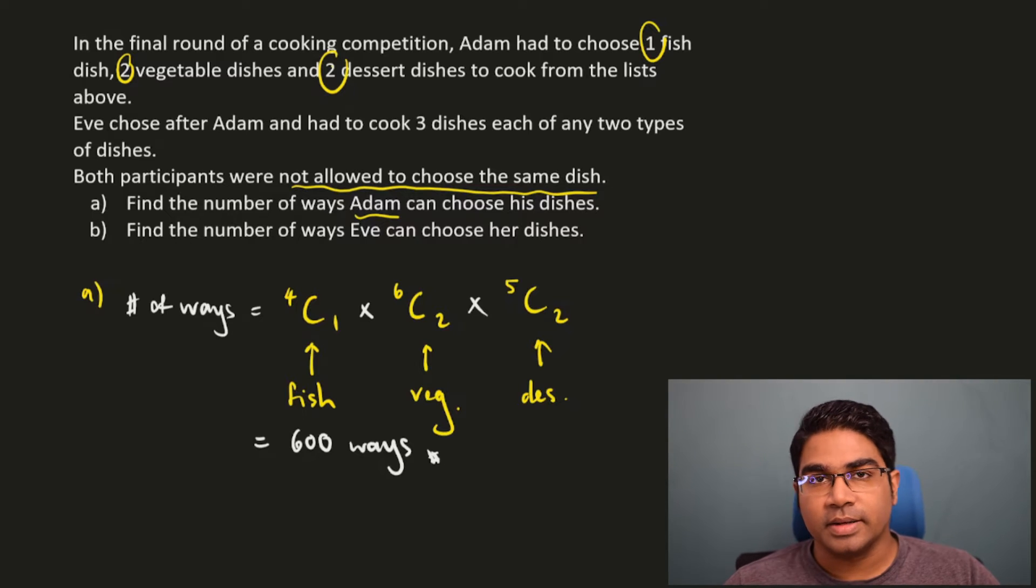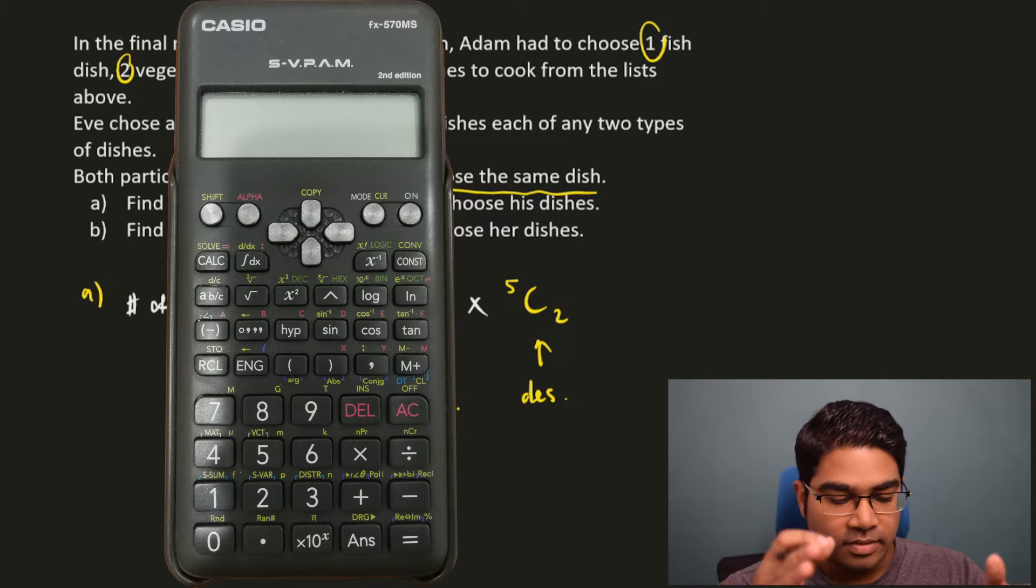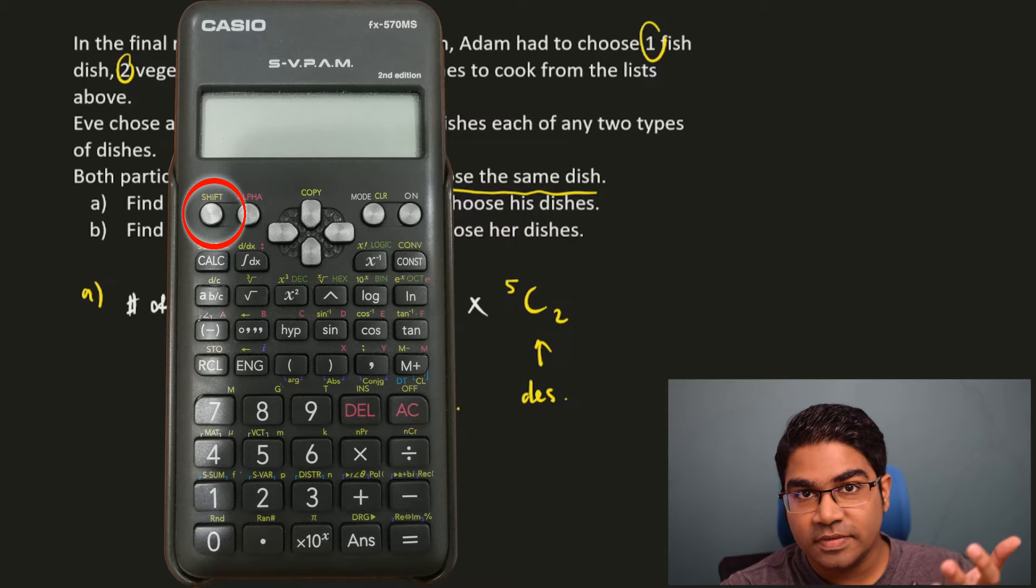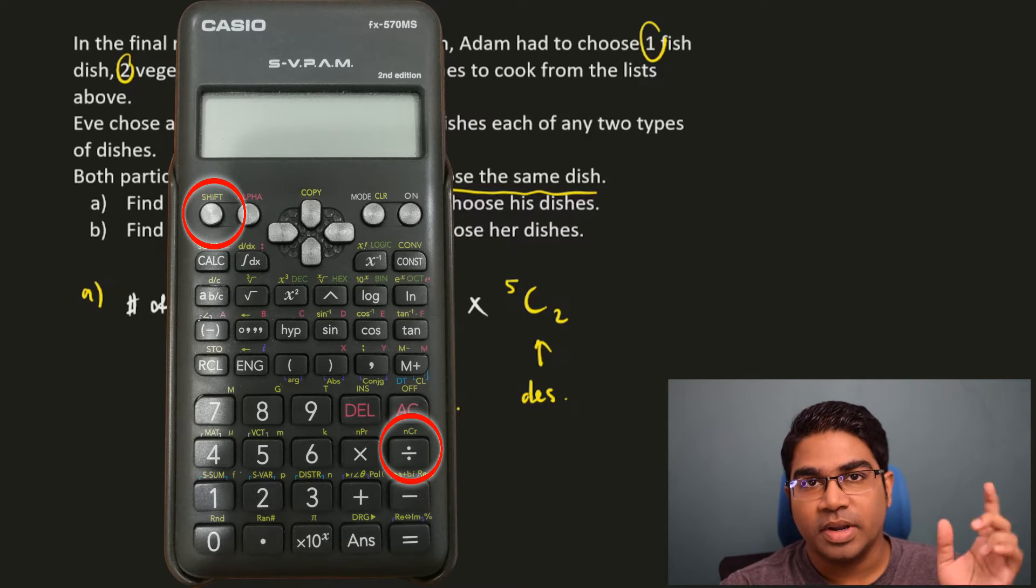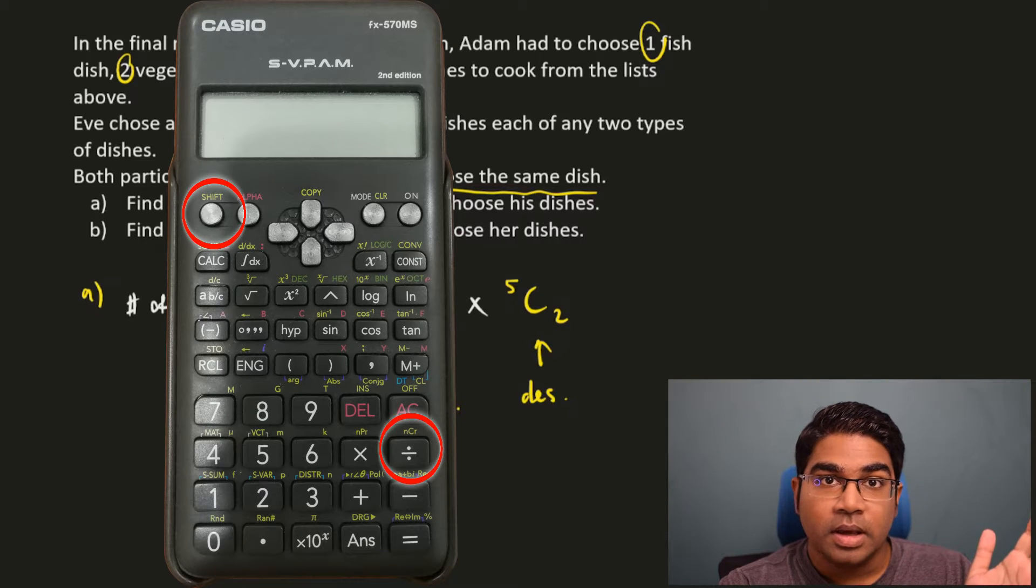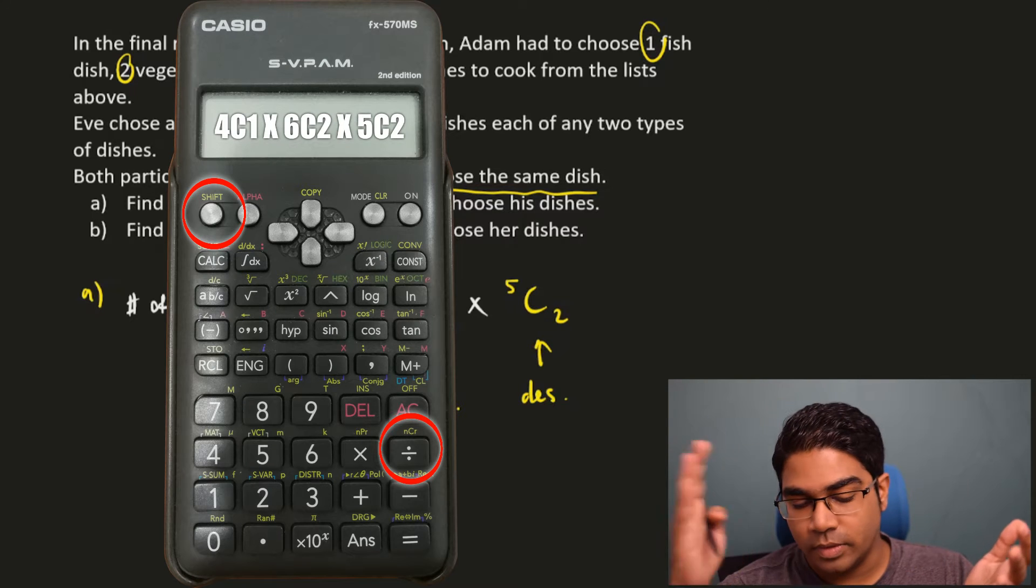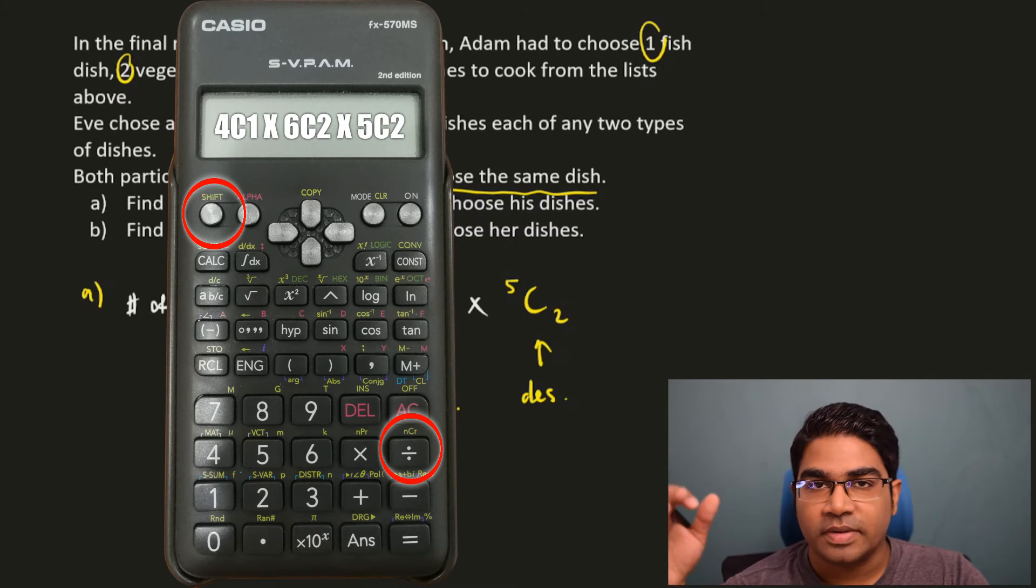I am going to show you how to do this on the calculator. So you take the calculator and then you press 4 and then shift C. Press shift and then press the C button as you can see on the screen. And then you press 1. And then you just do multiplication as usual. So times and then you follow on, 6C2 times 5C2. And you get the answer, you get 600.